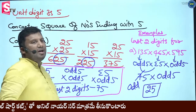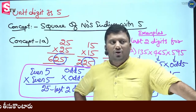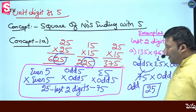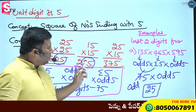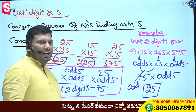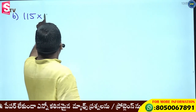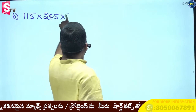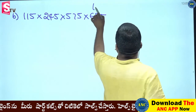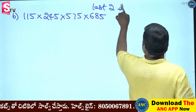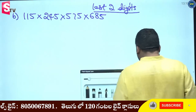Basic foundation — let's revise. Two odd numbers ending with 5: last two digits are 25. Two even numbers ending with 5: last two digits are 25. Otherwise 75. First simple example: 135, 45, 45, 55, 65. Second example: 115, 245, 575, 685. Last two digits of 115 into 245 into 575 into 685.